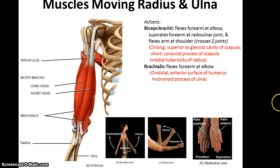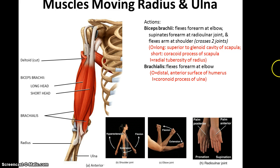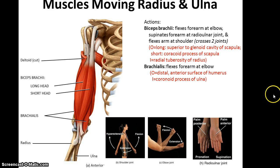Next we have the brachialis, which is deep to the biceps brachii. The brachialis will flex the forearm at the elbow. Its origin is the distal anterior surface of the humerus, and its insertion is the coronoid process of the ulna.